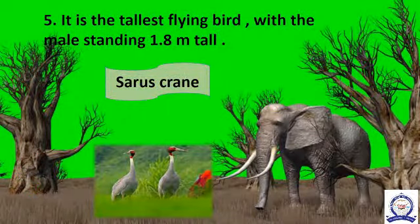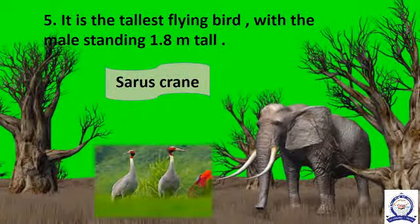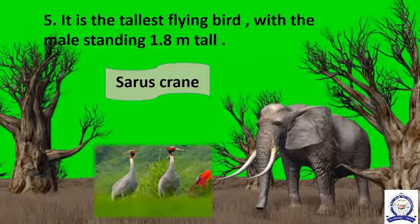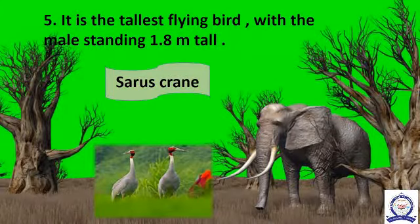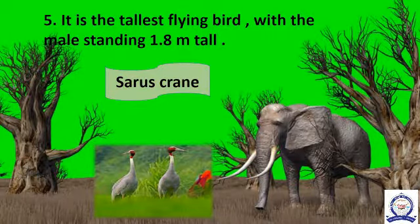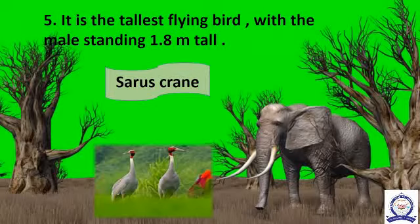Fifth one: it is the world's tallest flying bird, with the male standing 1.8 meters tall. It is found mainly in western Gujarat. The flying bird's name is Sarus Crane.